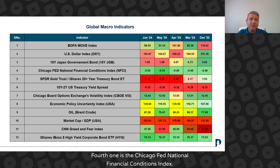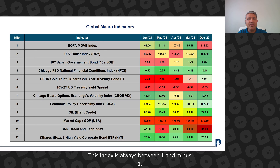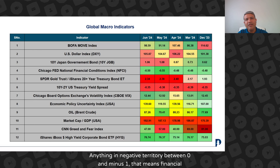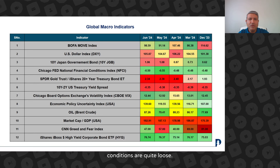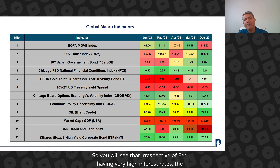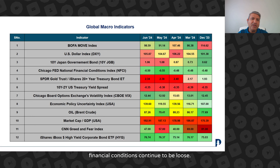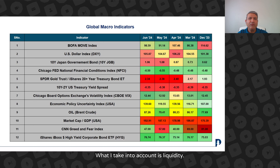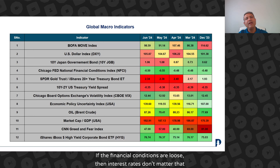The fourth one is the Chicago Fed National Financial Conditions Index. You will see that it is negative. This index is always between 1 and minus 1. Anything in positive territory between 0 and 1 means financial conditions are quite loose. So you will see that irrespective of the Fed having very high interest rates, financial conditions continue to be loose. Why I'm showing it here is I normally never take into account the Fed rate. What I take into account is liquidity. If the financial conditions are loose, then interest rates don't matter that much.